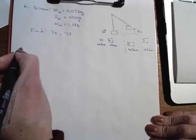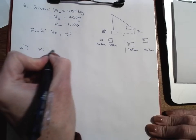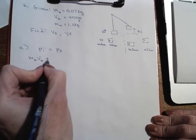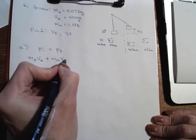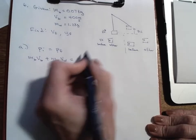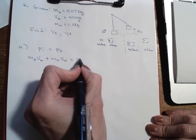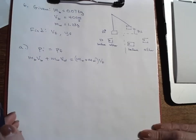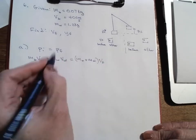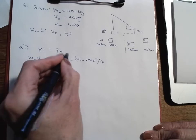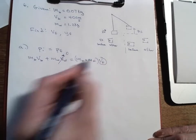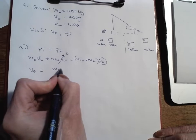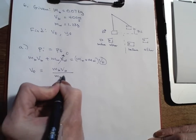Let's start with momentum to find part a. P-initial equals P-final, so: mass of the bullet times velocity of the bullet plus mass of the wood times velocity of the wood — all initial — equals the combined mass of bullet plus wood times their final velocity together. Since the wood isn't moving before the collision, that term goes to zero, and we divide both sides by the sum of the masses.